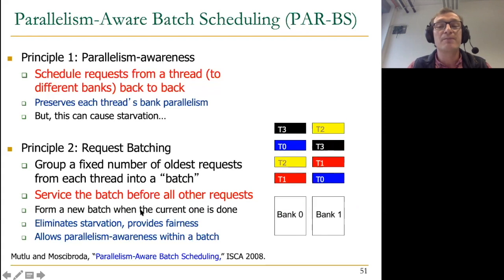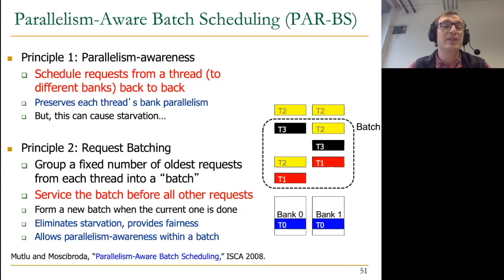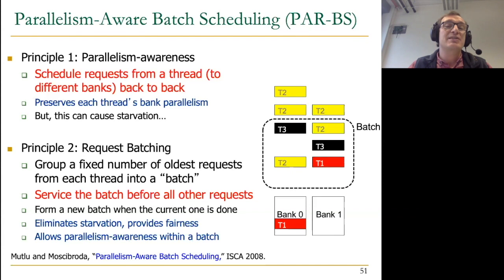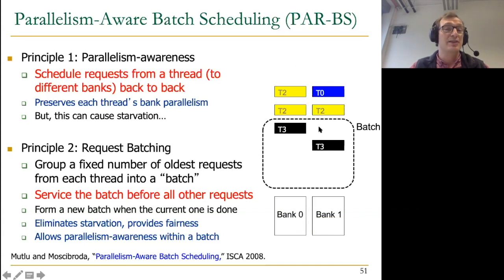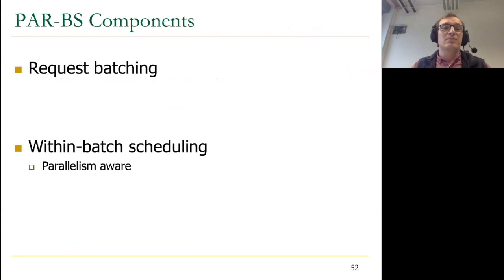We have two banks and four threads, each with two requests, one to each bank. The requests back up in the memory controller. The memory controller forms a batch and prioritizes thread zero to maximize parallelism. New requests from thread two arrive but don't get included in the batch — that's the key. The memory controller then takes thread one's requests and services them in parallel, then thread two's requests in the batch. It doesn't take thread two's new requests outside the batch because that would violate starvation freedom. After the current batch is complete, it moves on to the new batch.